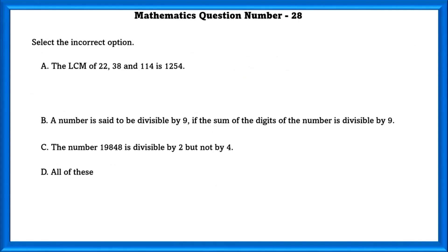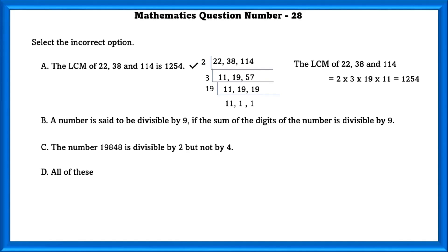Mathematics question number 28. Select the incorrect option. The LCM of 22, 38 and 144 is 1,254 — this statement is correct. A number is divisible by 9 if the sum of its digits is divisible by 9 — this is also true. The number 19,848 is divisible by 2 but not by 4 — this is wrong, because the last two digits are divisible by 4, so the statement is incorrect.